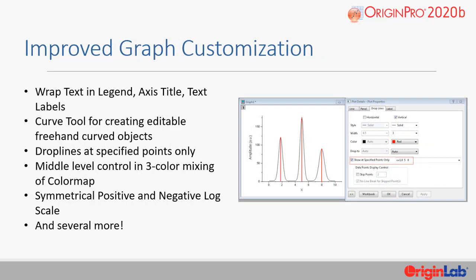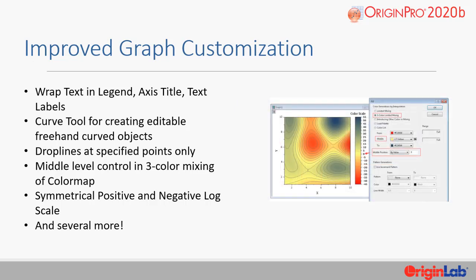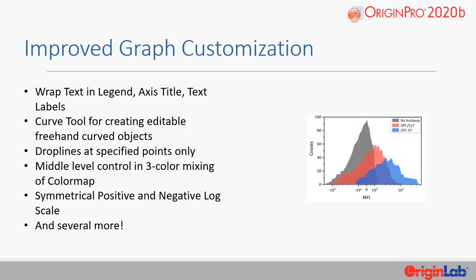Many key graph customization improvements have been made, such as wrap text in the legend, axis title, and text labels, a curve tool for creating editable freehand curved objects, drop lines at specified points only, middle level control in three color mixing of color map, symmetrical positive and negative log scale, and several more.